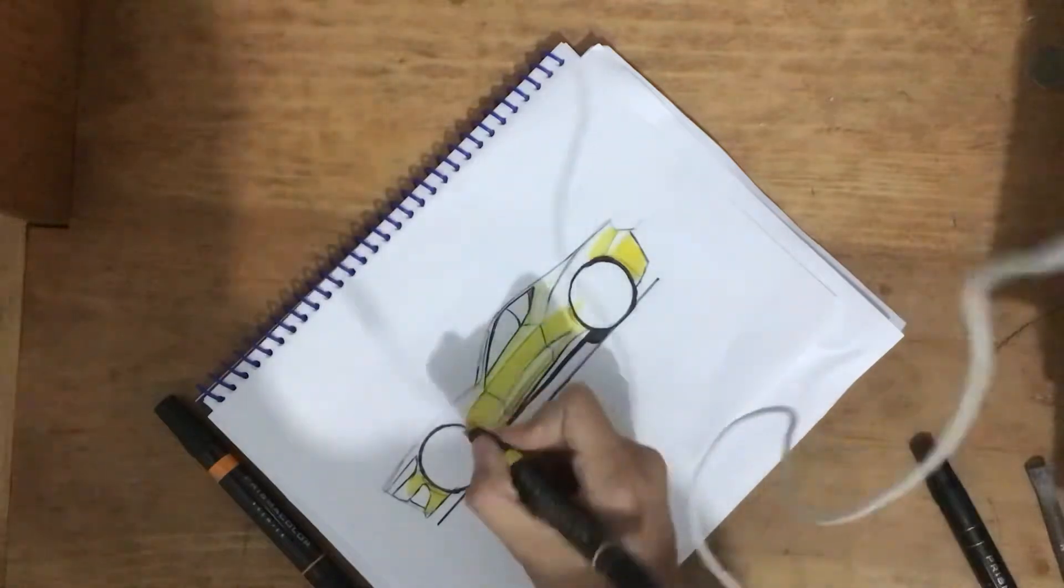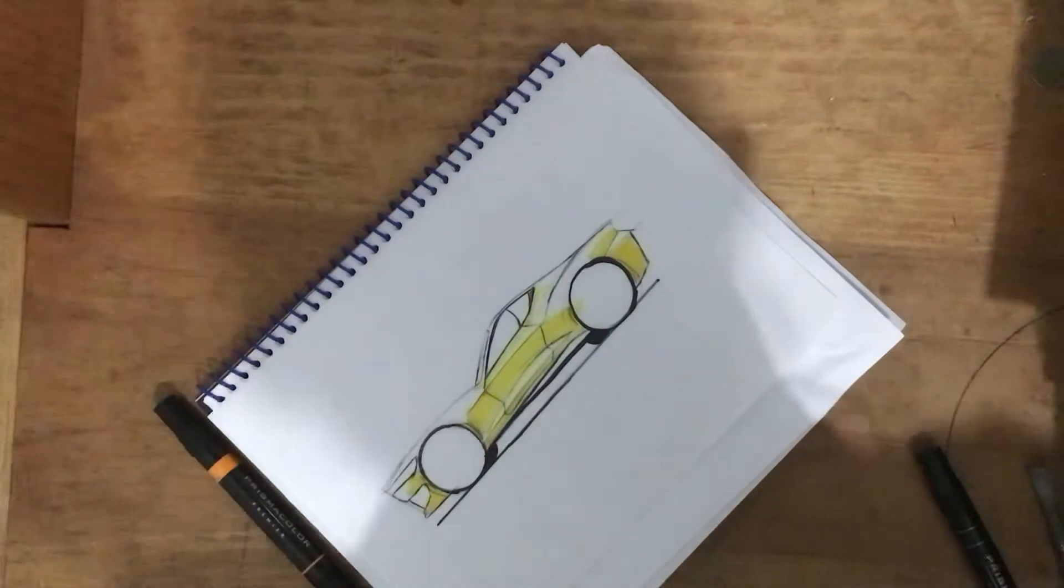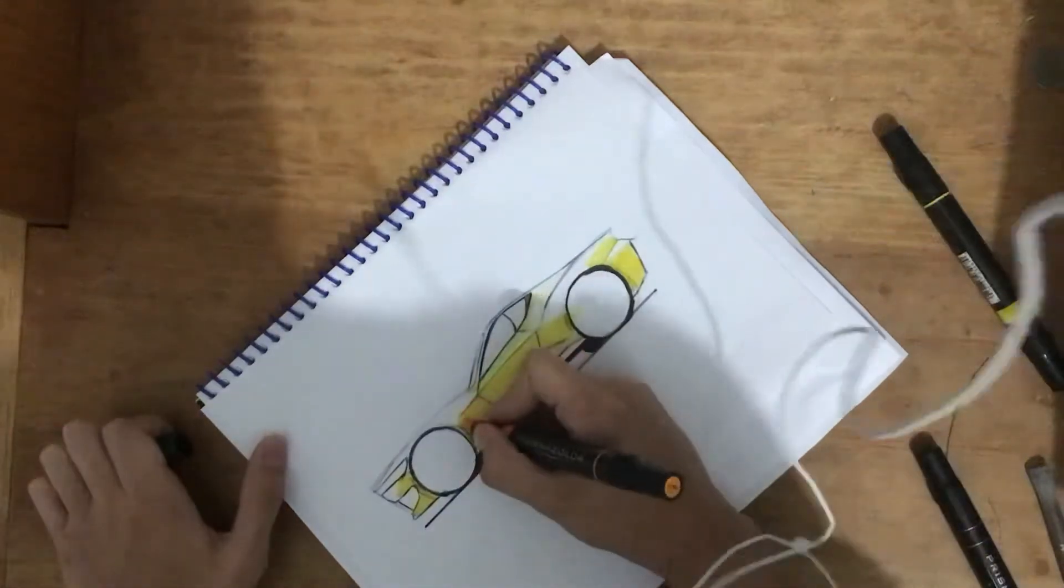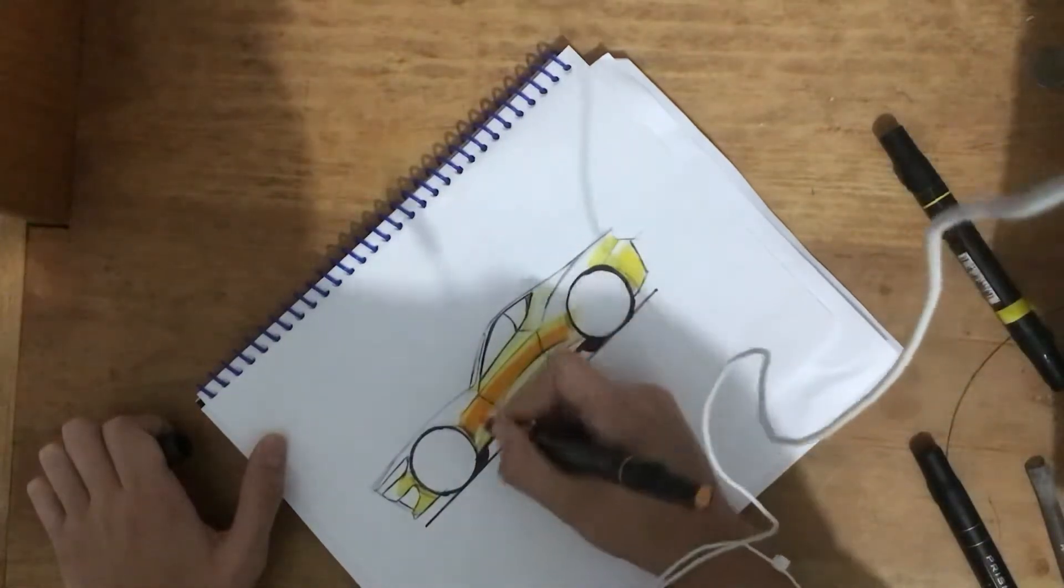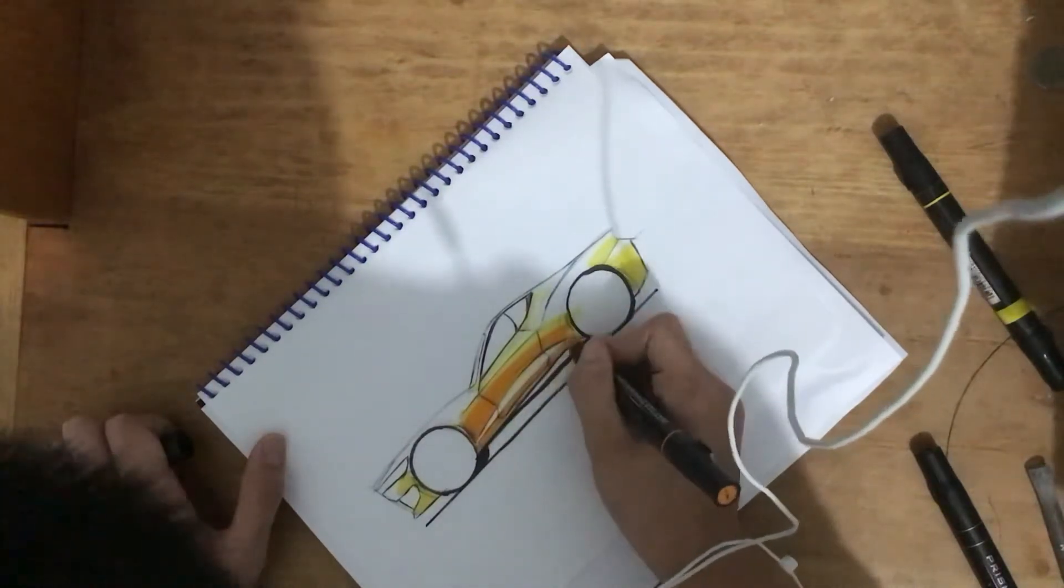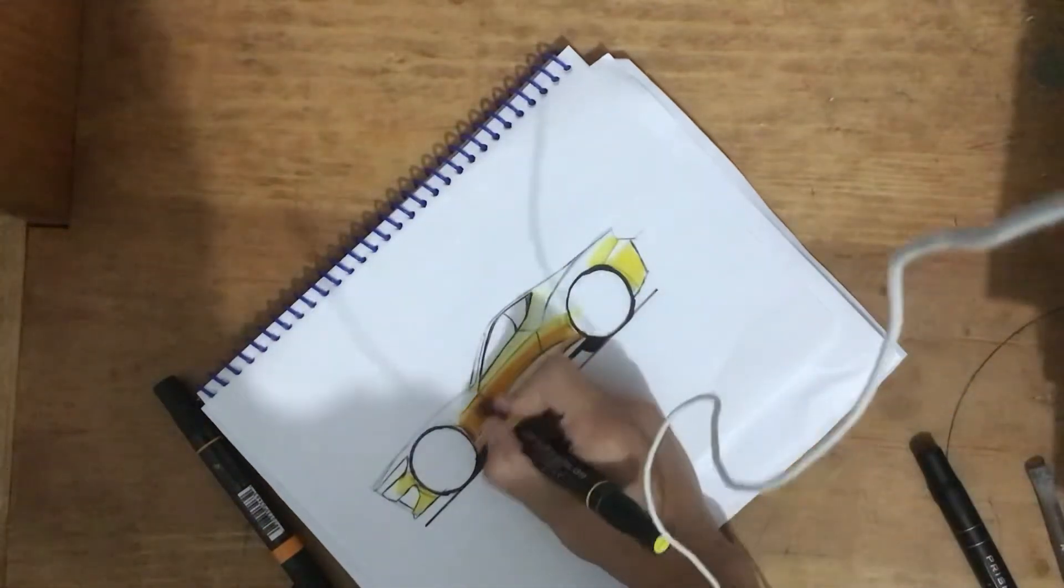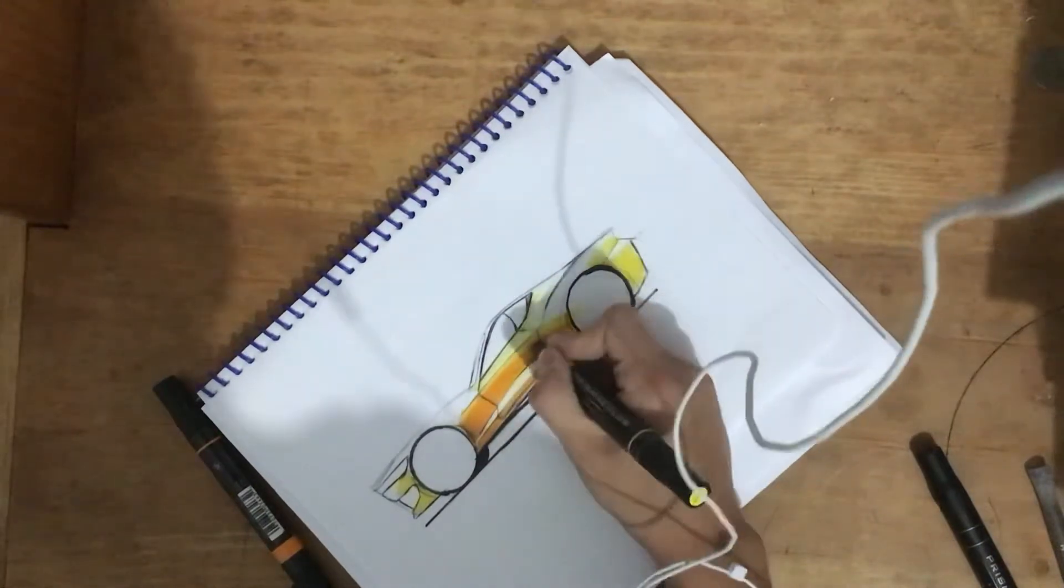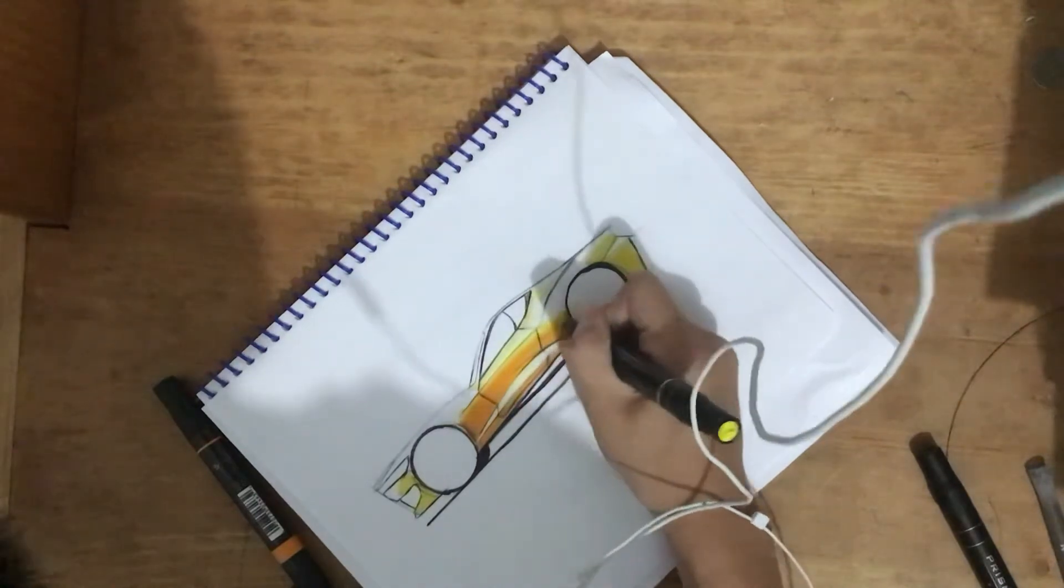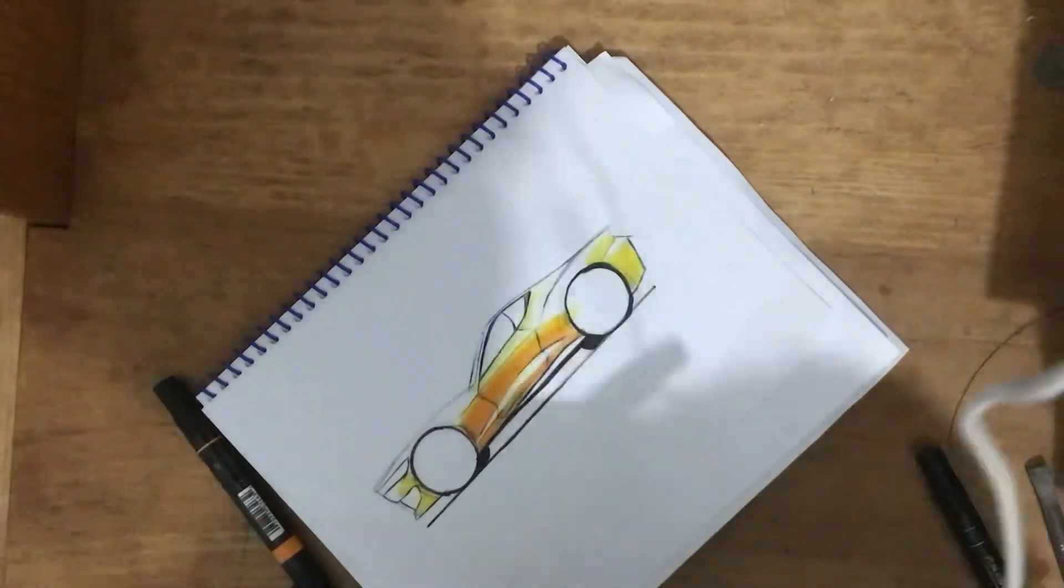Okay so now that we have the lightest shade laid down, now we're going to start placing down the orange. Now we can start blending it in, just like so.